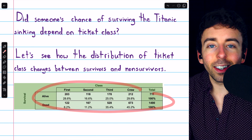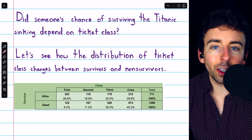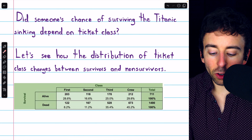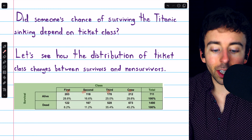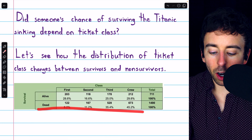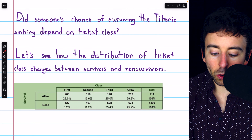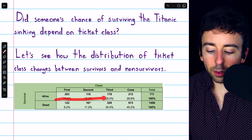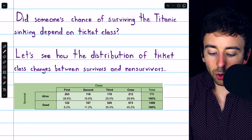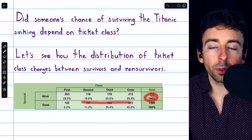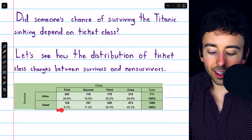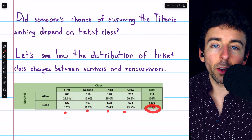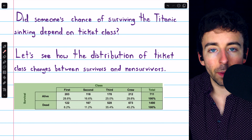In this table, we're really looking at two conditional distributions at once. In the first row, we're looking at the conditional distribution of ticket class given that the person survived. In the second row, we're looking at the conditional distribution of ticket class given that the person did not survive. In the first row, we're only considering those who survived, so everything adds up to 100%. Just like in the second row, we're only considering those who died, and so the percentages again add up to 100%.